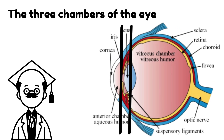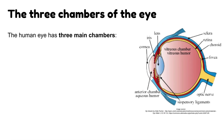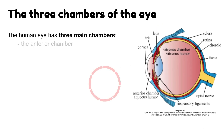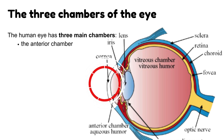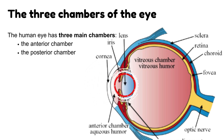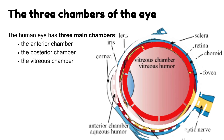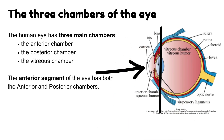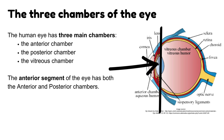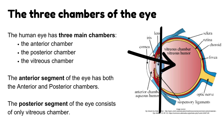The human eye has three main chambers: the anterior chamber, the posterior chamber, and the vitreous chamber. The anterior segment of the eye contains both the anterior and posterior chambers. The posterior segment of the eye consists of only the vitreous chamber.